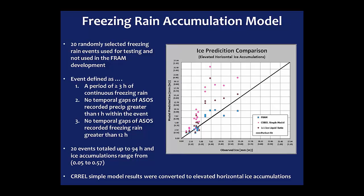We tested the model — FRAM, or Freezing Rain Accumulation Model — against 20 randomly selected freezing rain events. An event was defined as three or more hours of continuous freezing rain, no ASOS precipitation gaps greater than one hour within the event, and no gaps of recorded freezing rain greater than 12 hours. So an event could include freezing rain for four hours, a warm-up of four hours, and another four hours of freezing rain combined into a single eight-hour event. These 20 events were randomly selected from cases satisfying the criteria.